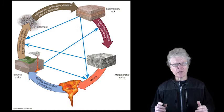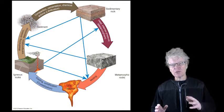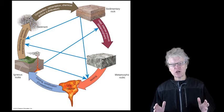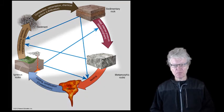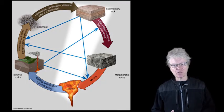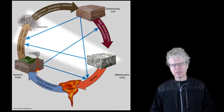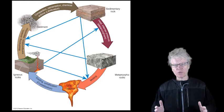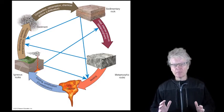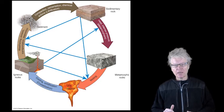However, it's not always a complete cycle. You can get igneous rocks turning into metamorphic rocks without going through sedimentary rocks. Sedimentary rocks can turn back into igneous rocks without going through metamorphic rocks. Metamorphic rocks can become sedimentary rocks without going back into igneous rocks. So although we call it the rock cycle, there are many shortcuts between one rock type and another. Let's simplify it and look at how igneous rocks can go to sedimentary rocks.